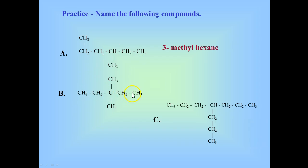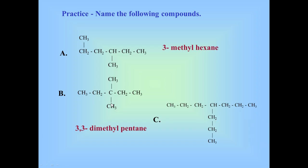The longest chain goes right down the middle — five carbons, so it's pentane. Notice that central carbon has no hydrogens because it's bonded in four directions. There's a methyl group on top and a methyl group on the bottom, both on carbon three. Two methyls means dimethyl, and since there are two you need two numbers. That gives 3,3-dimethylpentane.